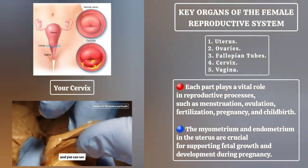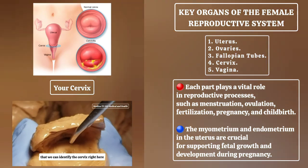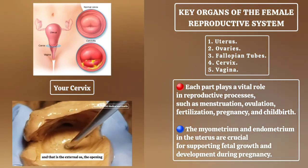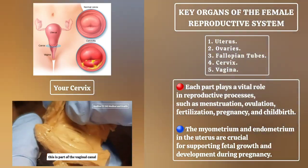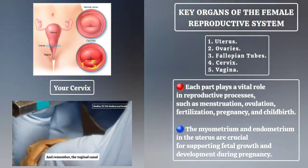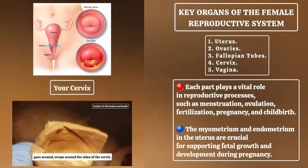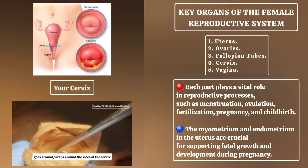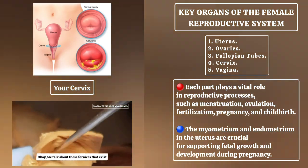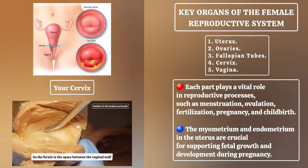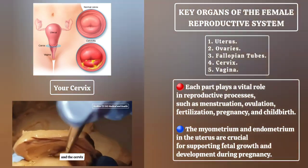You can see that we can identify the cervix right here, and that is the external os — the opening. This is part of the vaginal canal. The vaginal canal basically goes around and wraps around the sides of the cervix. This would be the fornix — the fornix is the space between the vaginal wall and the cervix.